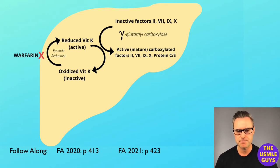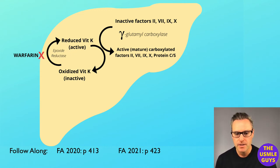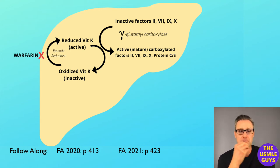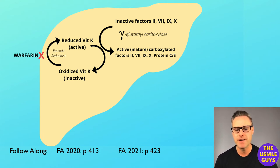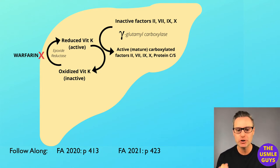A few important points for your exam. First, warfarin anticoagulates by inhibiting the vitamin K epoxide reductase enzyme, which means we can't take oxidized vitamin K and reduce it to an active form. Second, administration of vitamin K has the potential to reverse the inhibitory effects of warfarin on clotting factor synthesis, but fresh frozen plasma will reverse the actions of warfarin immediately and can be given along with vitamin K for cases of very severe bleeding. Third, neonates lack the enteric bacteria needed to make vitamin K, making them susceptible to bleeding — so an intramuscular injection of vitamin K is needed at birth.